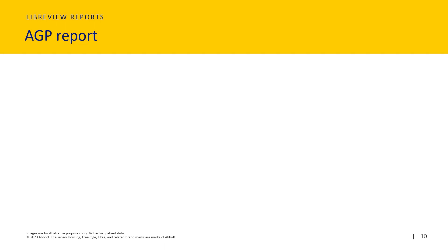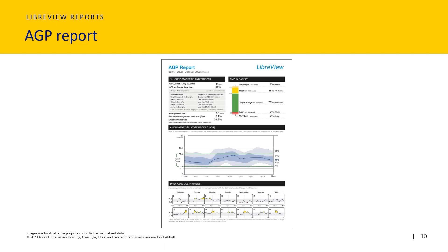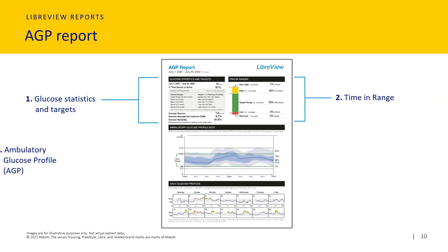Another report that you may find useful to understand is the AGP, or Ambulatory Glucose Profile Report. This is the report that your healthcare professional is likely to refer to within your clinic discussions. It analyzes all your glucose levels over the past 14 days and sorts the glucose information into pictures and graphs in a way that shows your time in range and glucose trends, all in a single one-page summary. The report is split into four sections: one, glucose statistics and targets; two, time in range; three, ambulatory glucose profile (AGP); four, daily glucose profiles.